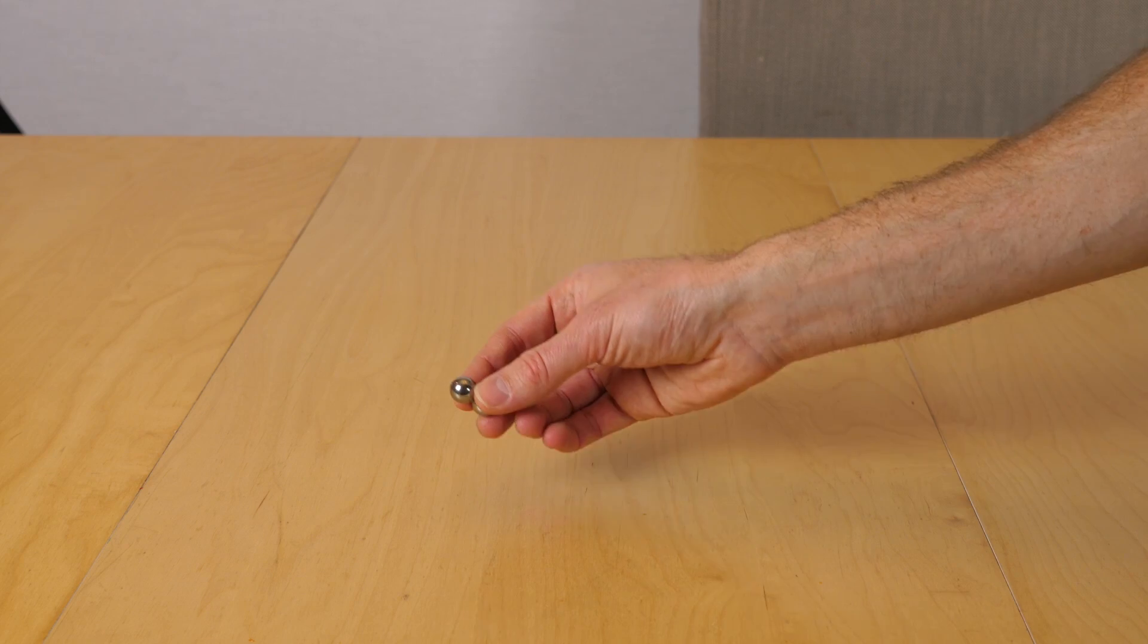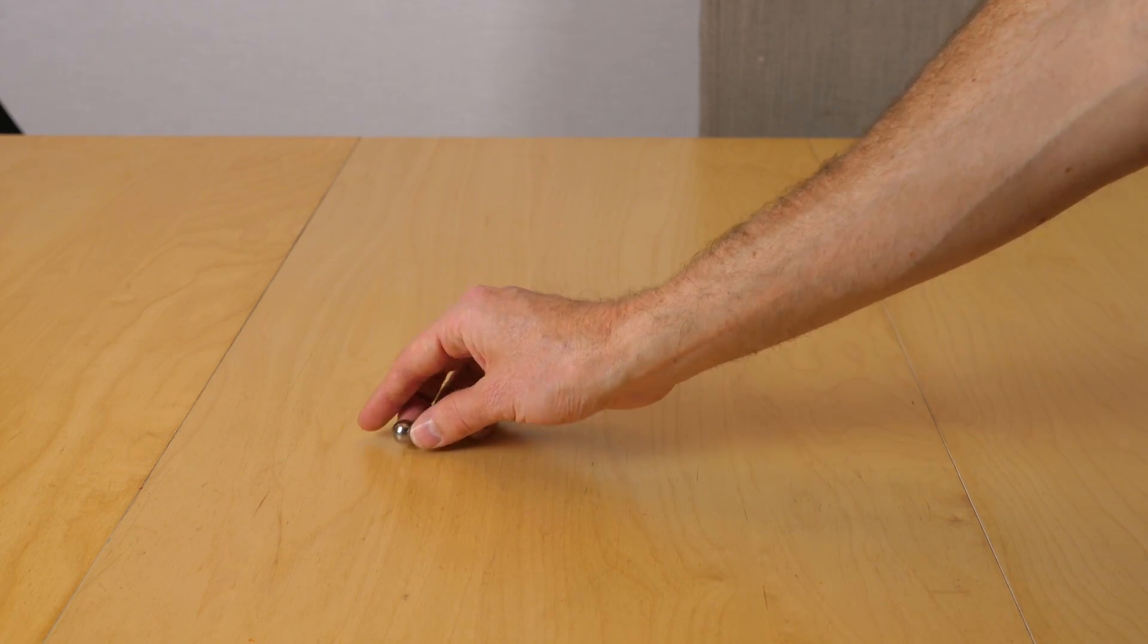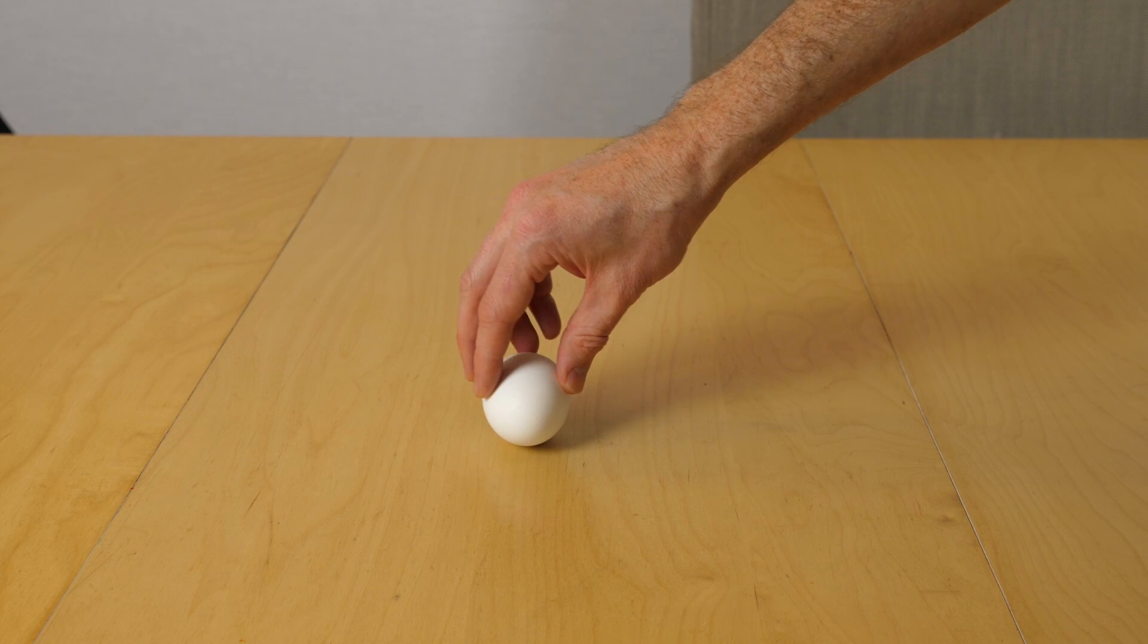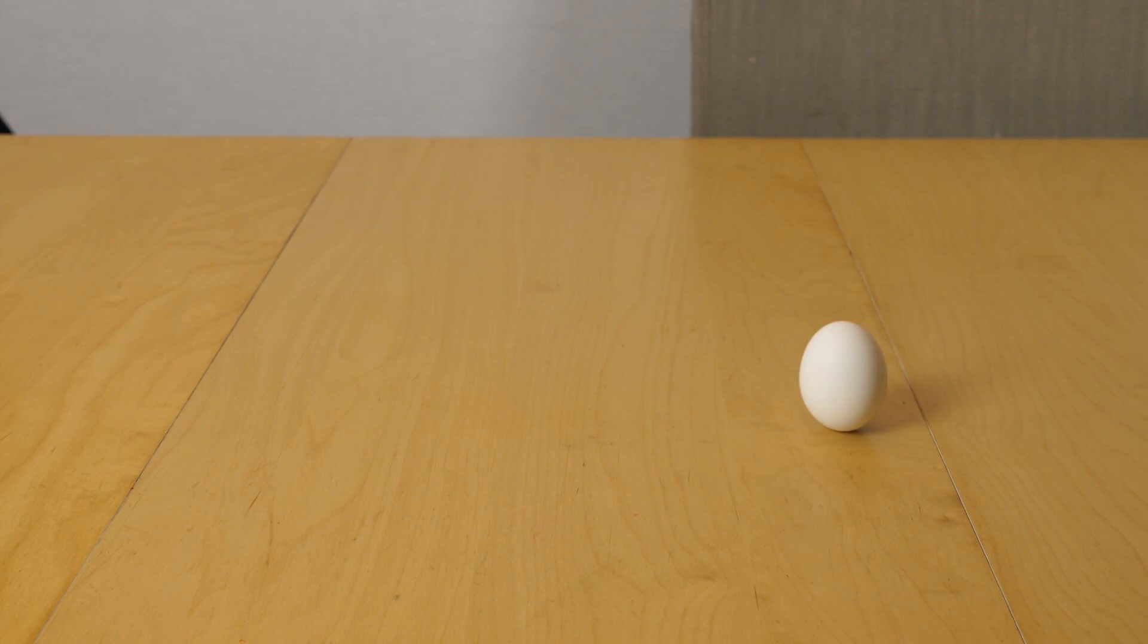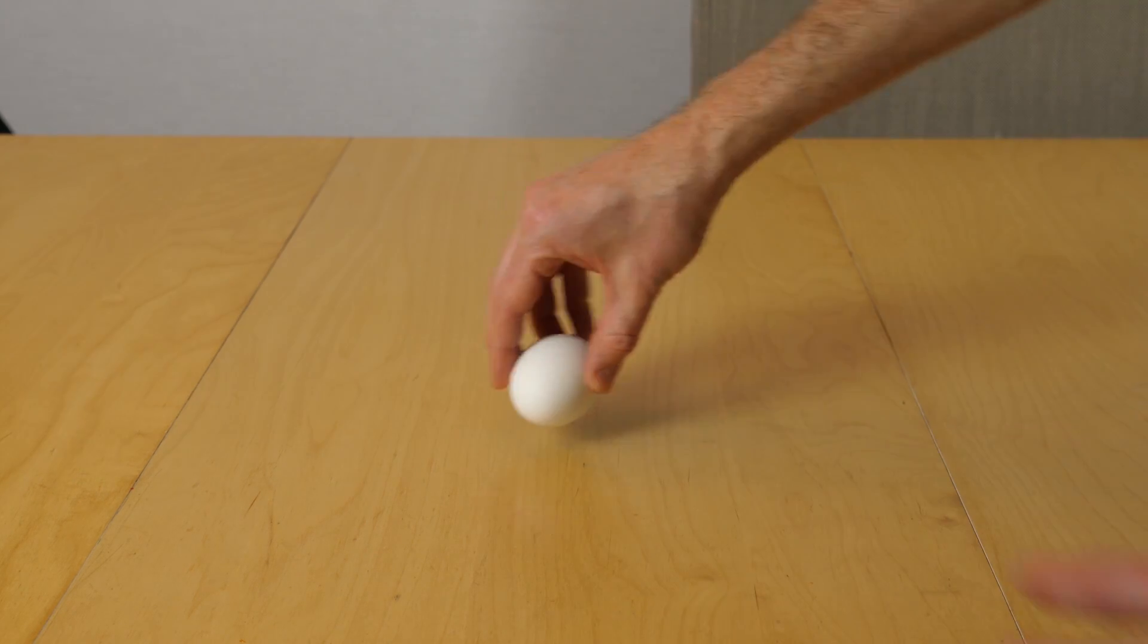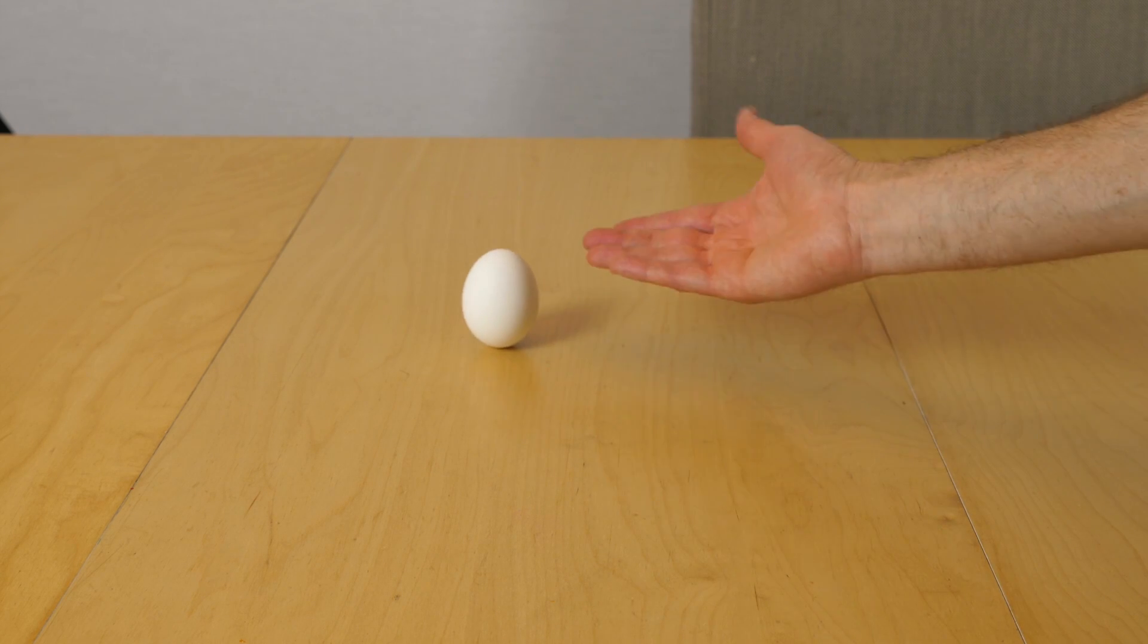And if you've ever spun a hard-boiled egg before, that's the same reason why it spins up on its end. Let's take a look. So watch what happens when you spin a hard-boiled egg. It immediately jumps up and starts spinning on its end. Watch again. Look how stable it gets and it just stays up on its end like that.